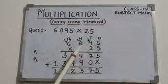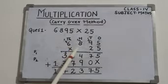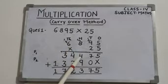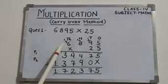5, 8 jump 40, add the carry over number 4, 40 plus 4, 44. Write the number 4 and another number carry over.